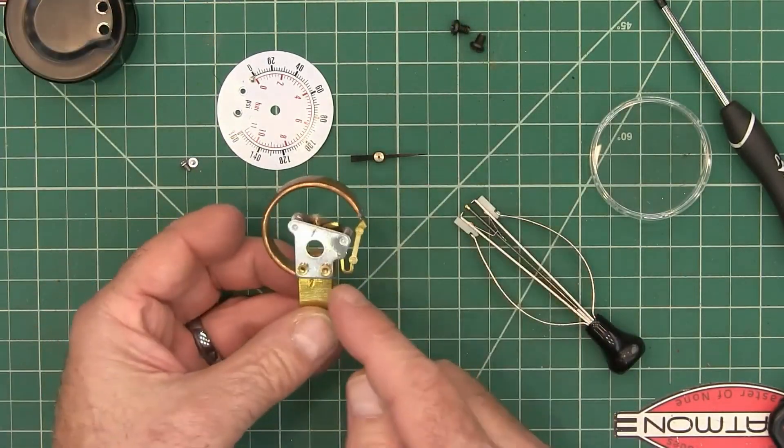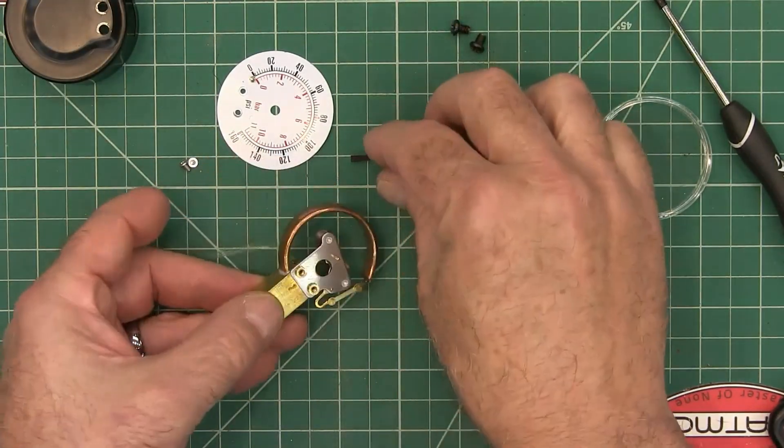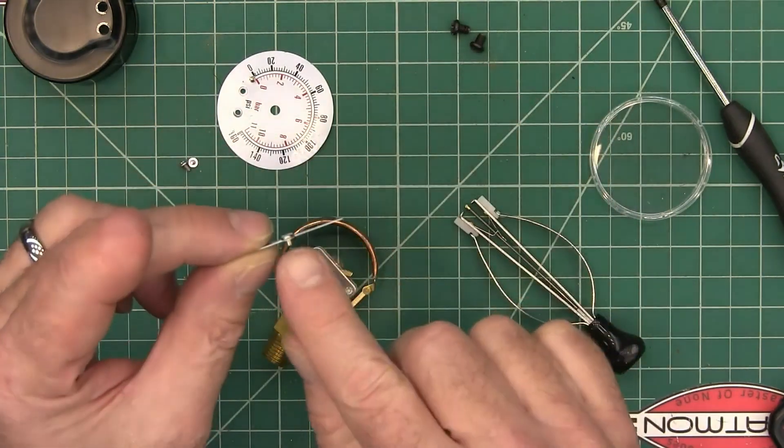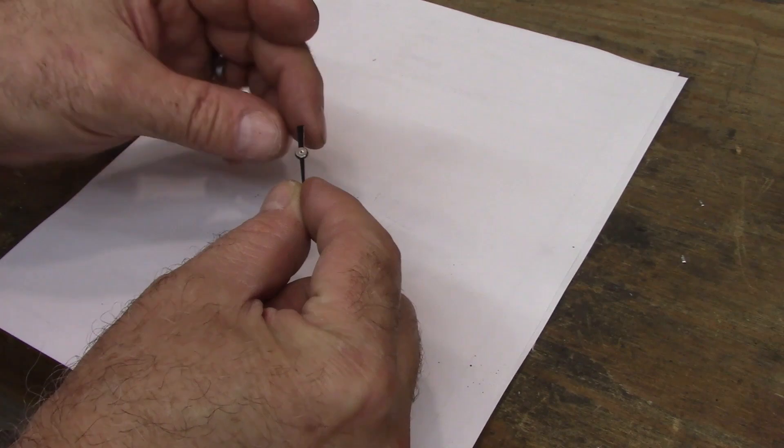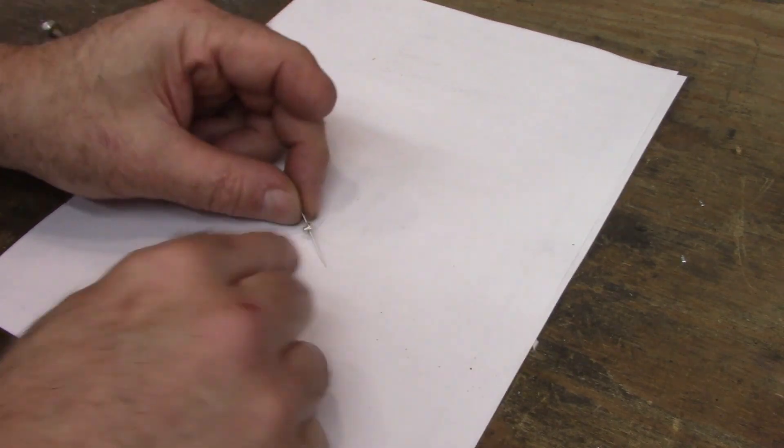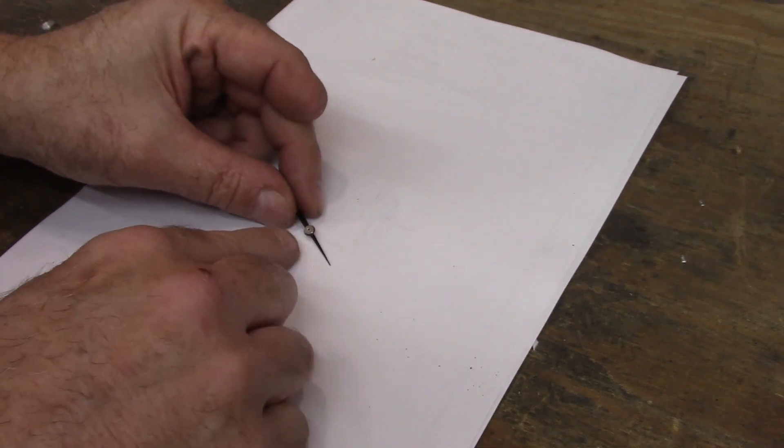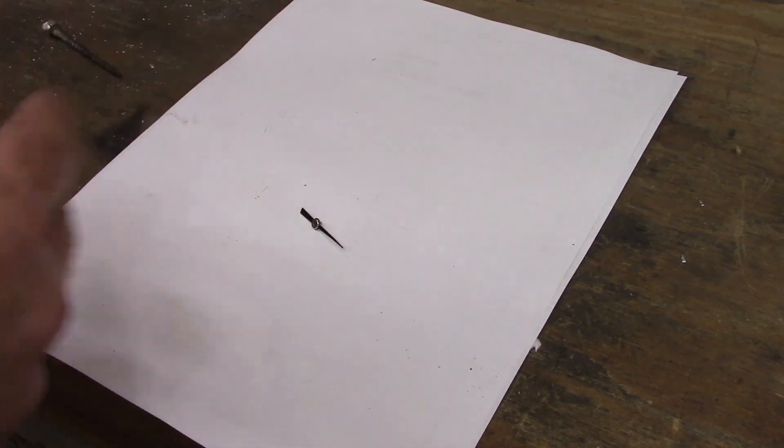So this is the main thing we need out of there and we want to be sure we preserve this little hub that's on that needle. This is the needle that came off of the original pressure gauge and I want that little hub because I'm going to glue this hub to the needle that I made.